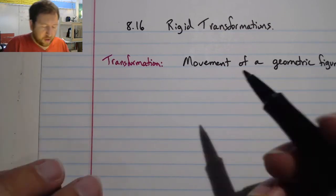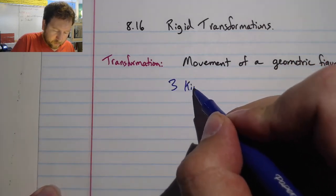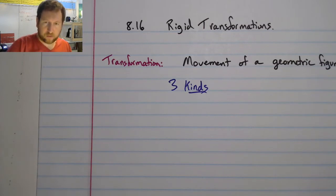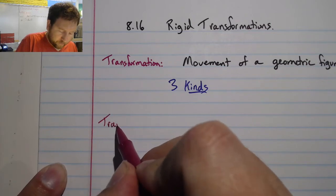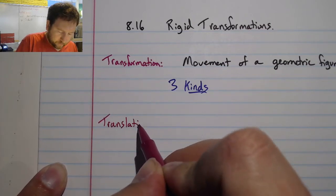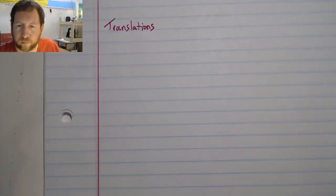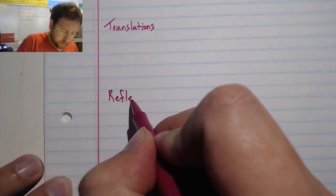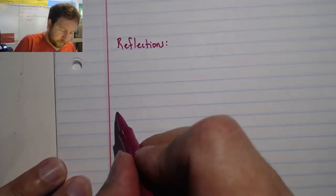We have three kinds: translations, reflections, and rotations.